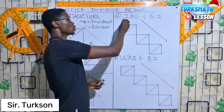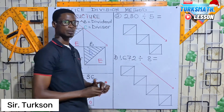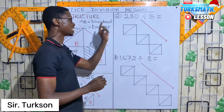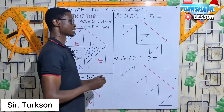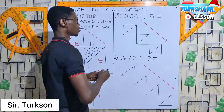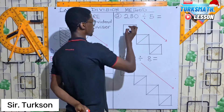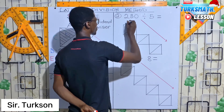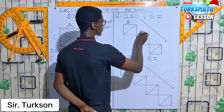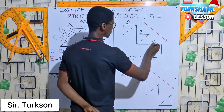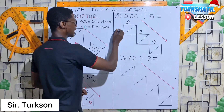Now let's look at Example 2: 230 divided by 5. The first thing is to draw your lattice, then label it. We label the boxes 2, 3, 0 with divisor 5.